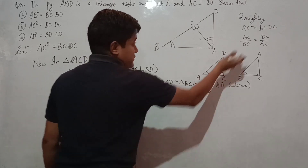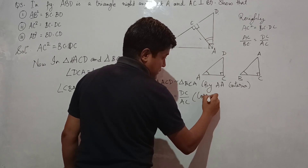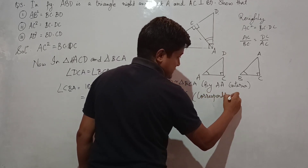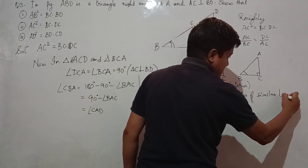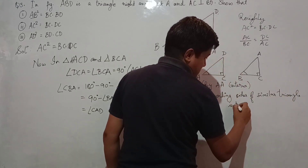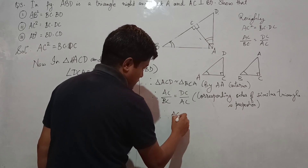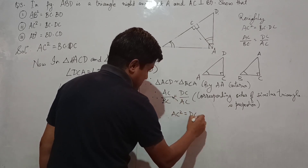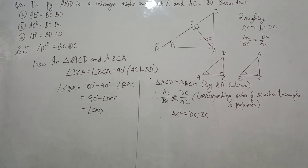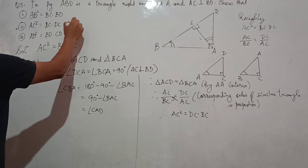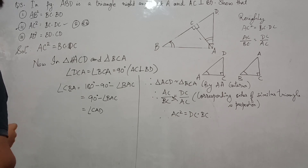Therefore, AC divided by BC equals DC divided by AC. Corresponding sides of similar triangles are proportional. Therefore, AC² equals DC·BC. Roman numeral (ii) is also proven. This question is actually the same as question number 2 of Exercise 6.5.